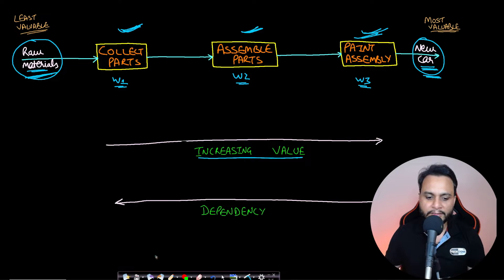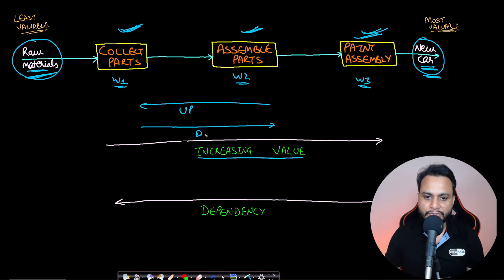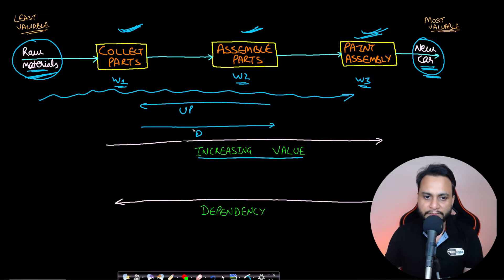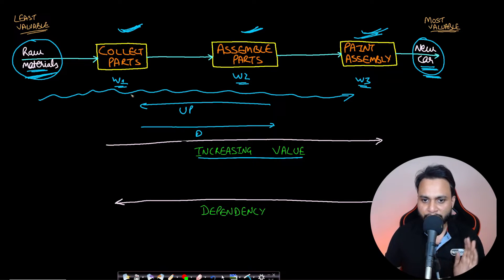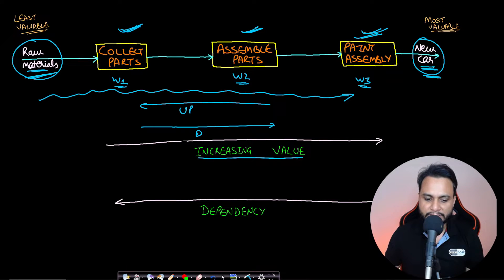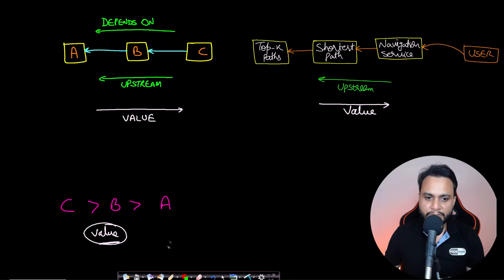In this case, moving from right to left is upstream and moving from left to right is downstream. You can imagine it like the flow of a river — the river water is flowing from left to right because the parts are moving from left to right. So moving left to right is downstream.